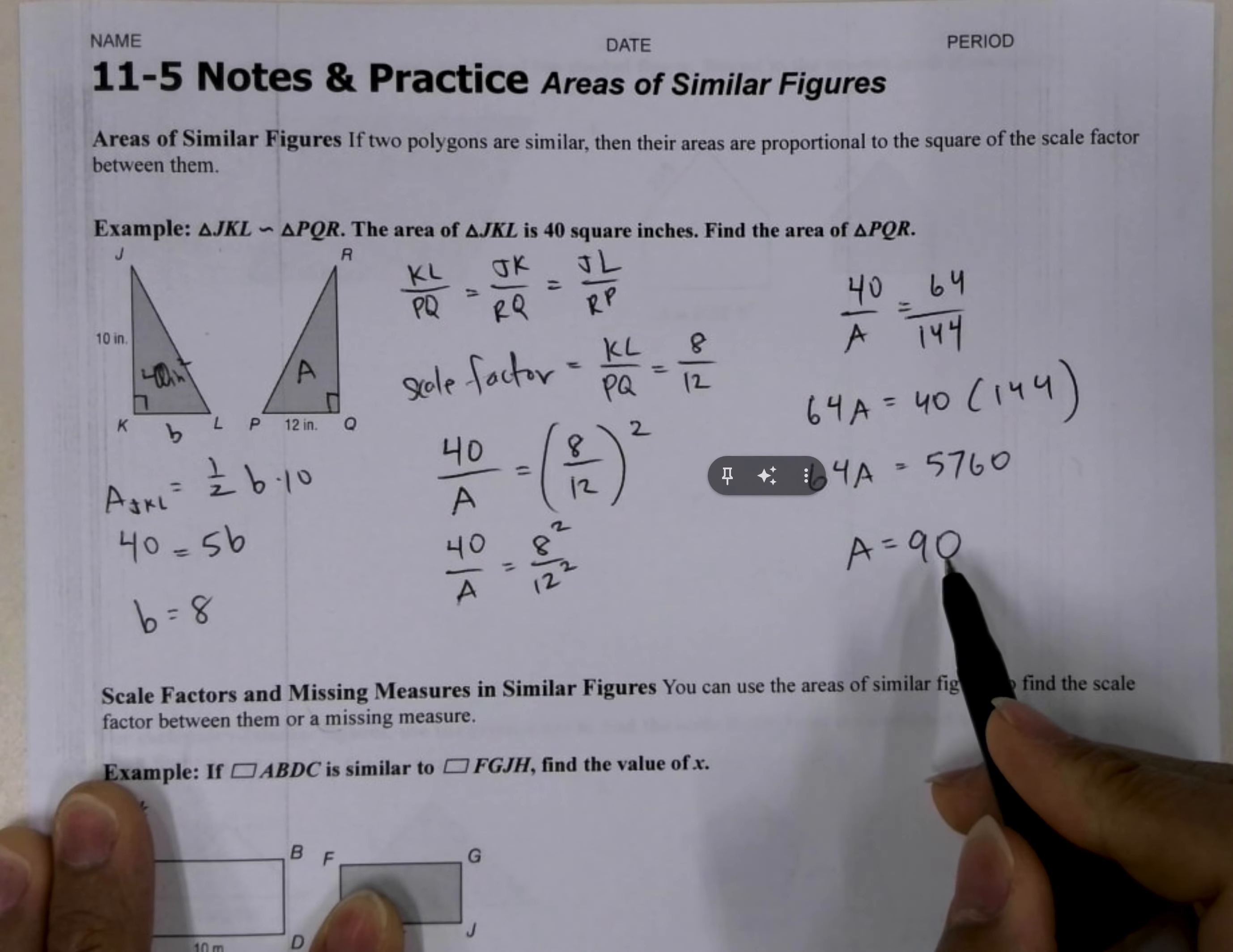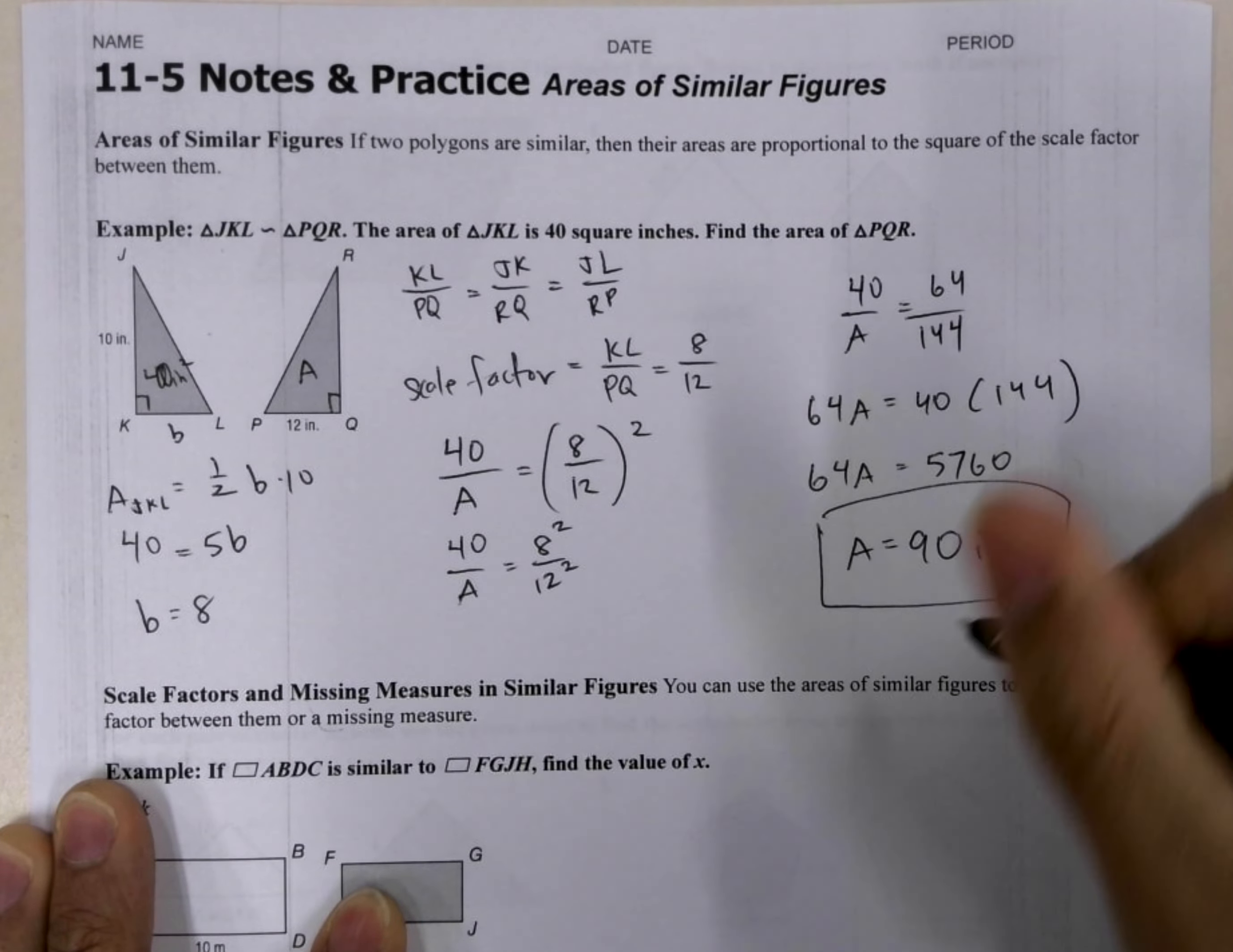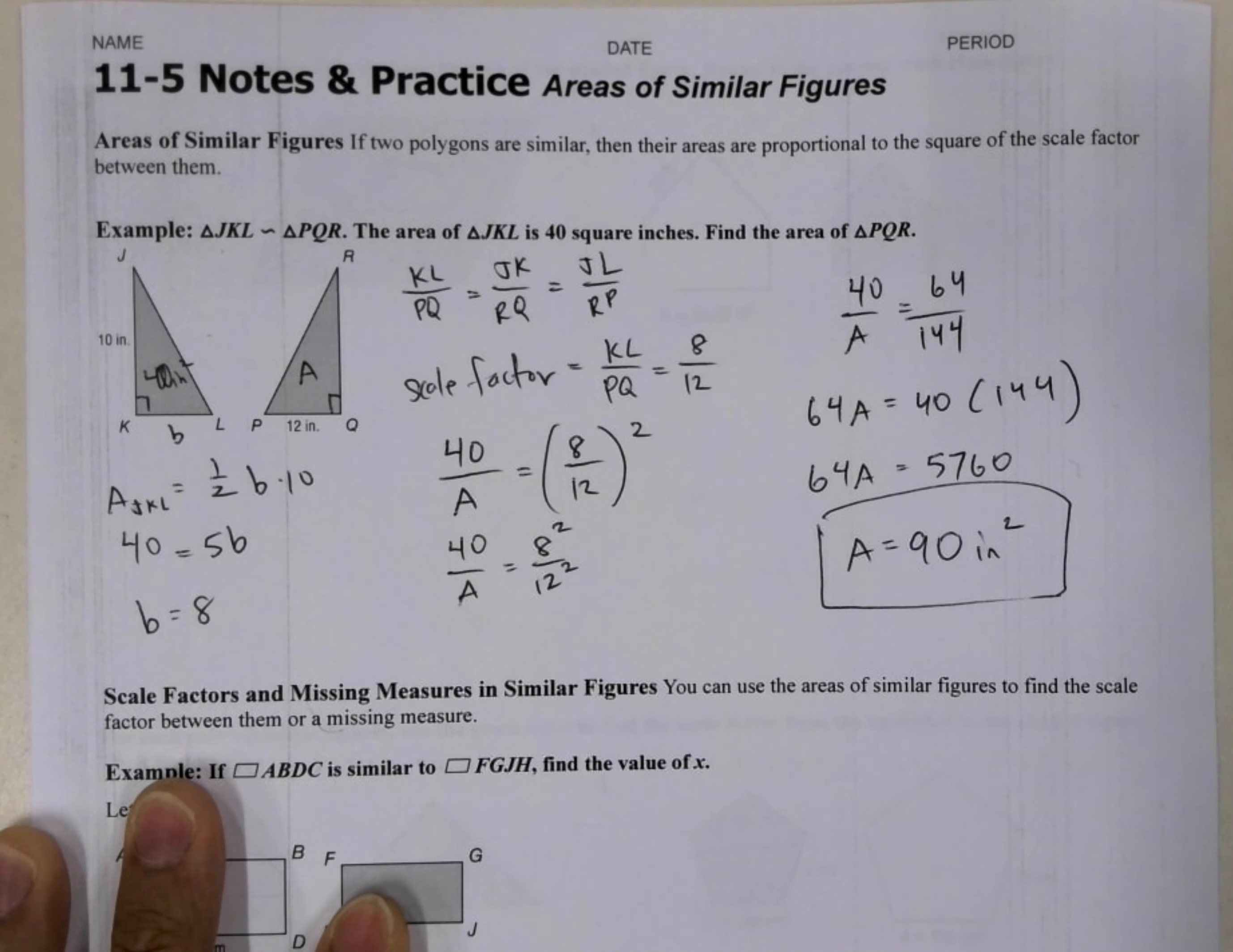And then remember, our units is in inches, and our area is always in units squared. So we get 90. So anyhow, this is how we're going to solve these types of problems. Let's do the problems on the back and then I'll come back and review them.